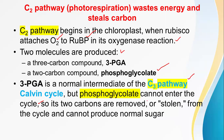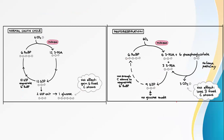Phosphoglycolate cannot enter the Calvin cycle, so its 2 carbons are removed — stolen from the cycle — and cannot be used to produce normal sugars. In the normal process, glucose is the final product formed. The net effect gains 6 fixed carbon atoms, and 10 G3P regenerates 6 ribulose bisphosphate.